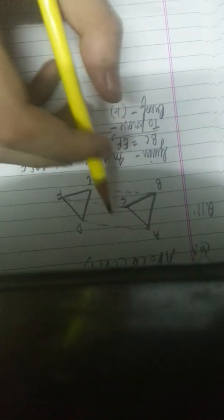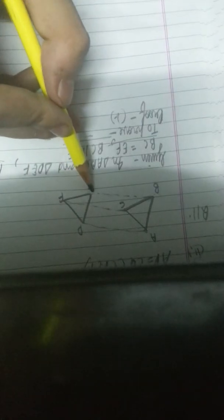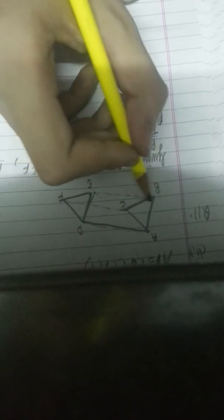This proof has many parts. Firstly, we have to prove that quadrilateral ABED is a parallelogram. So we can say here ABED is a parallelogram.